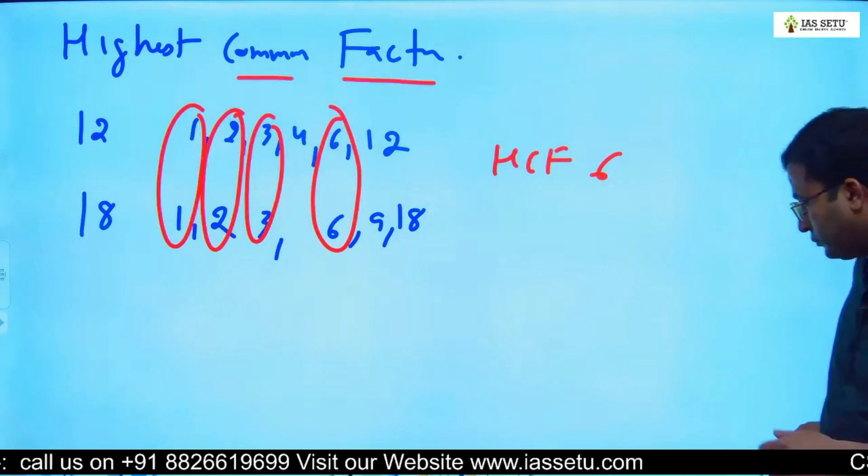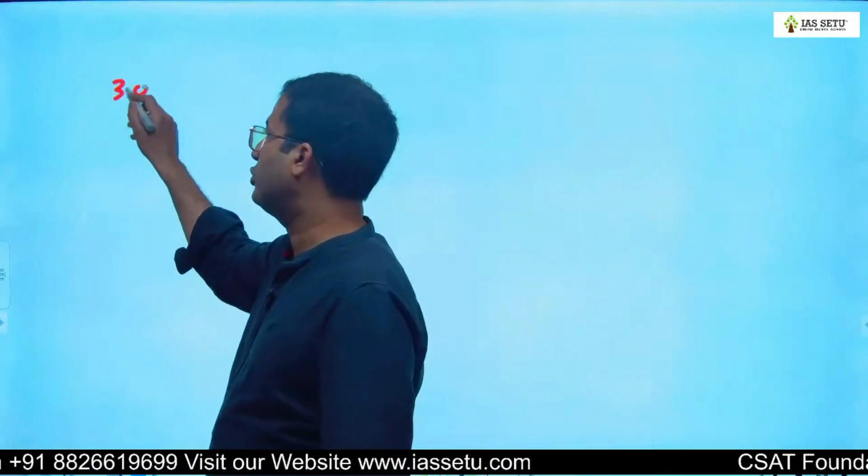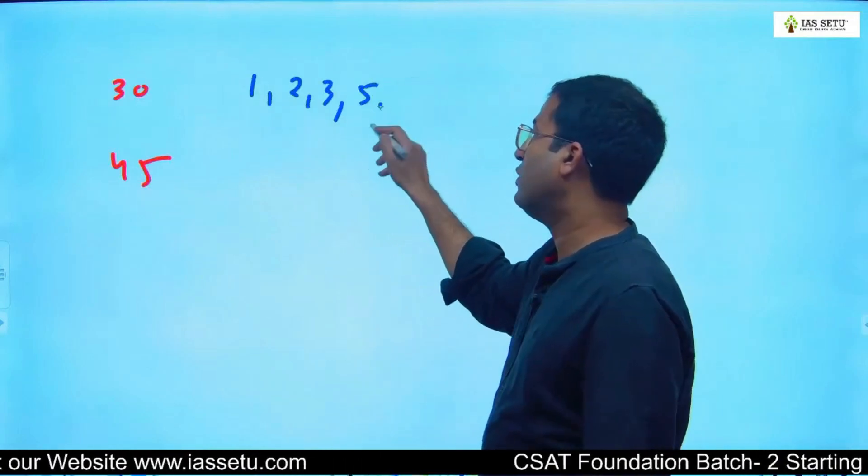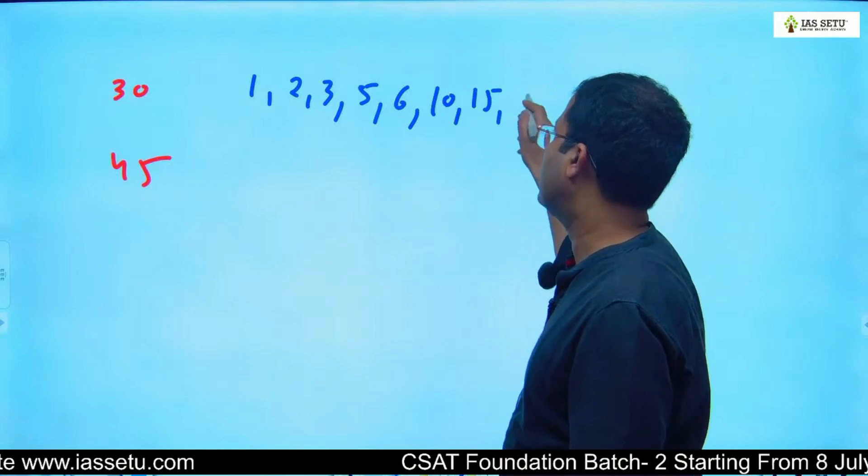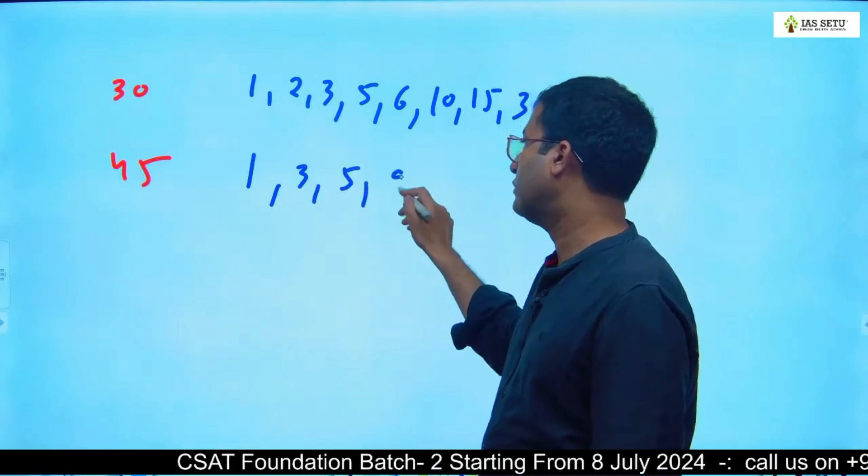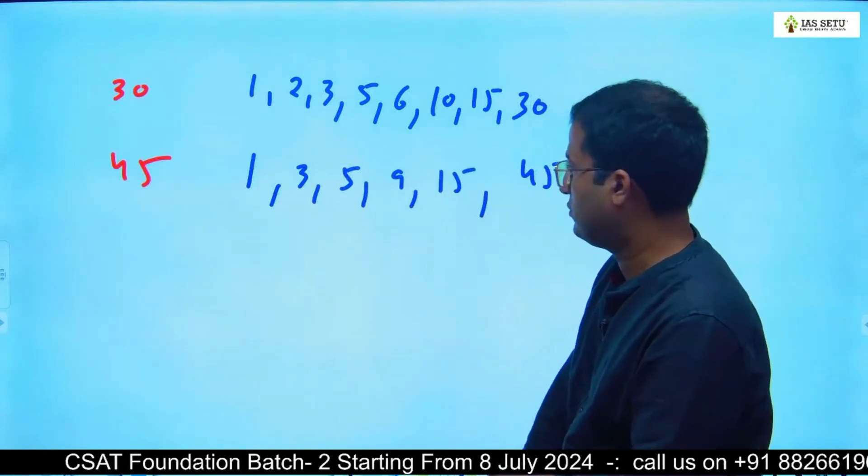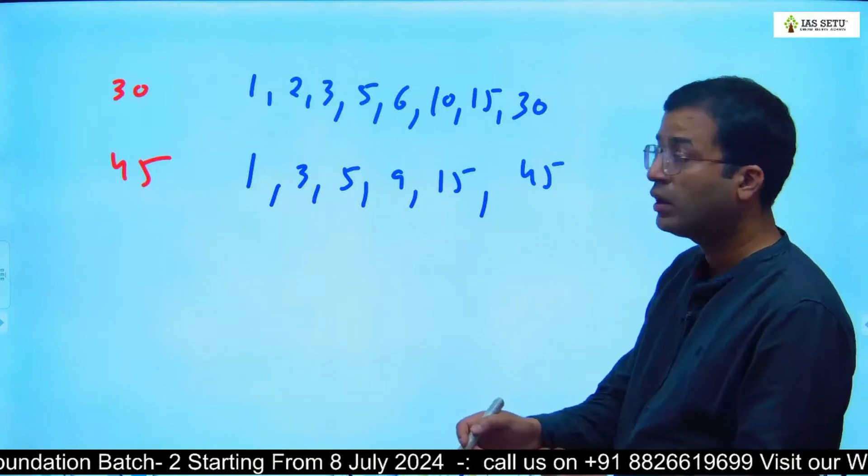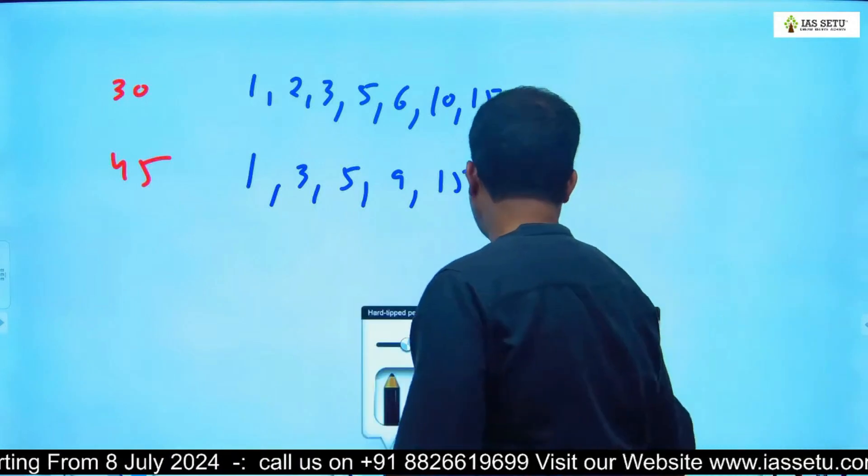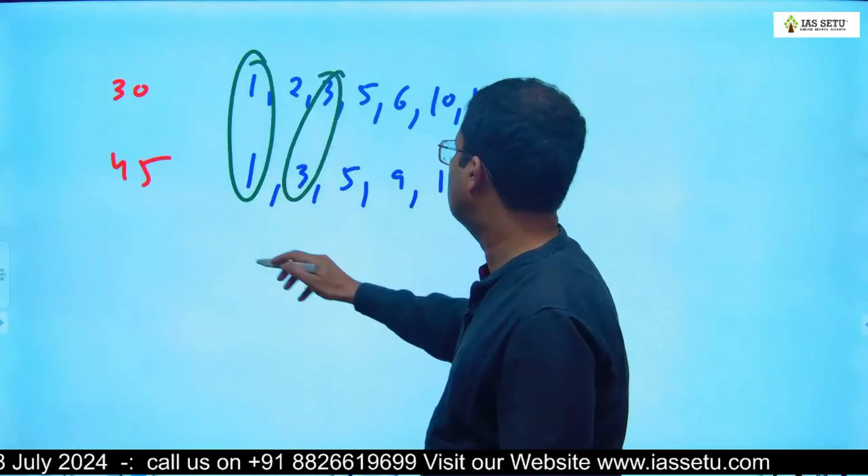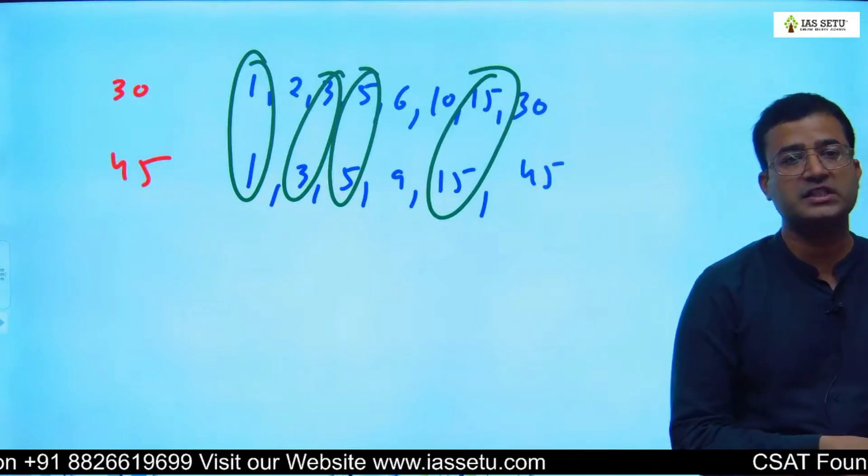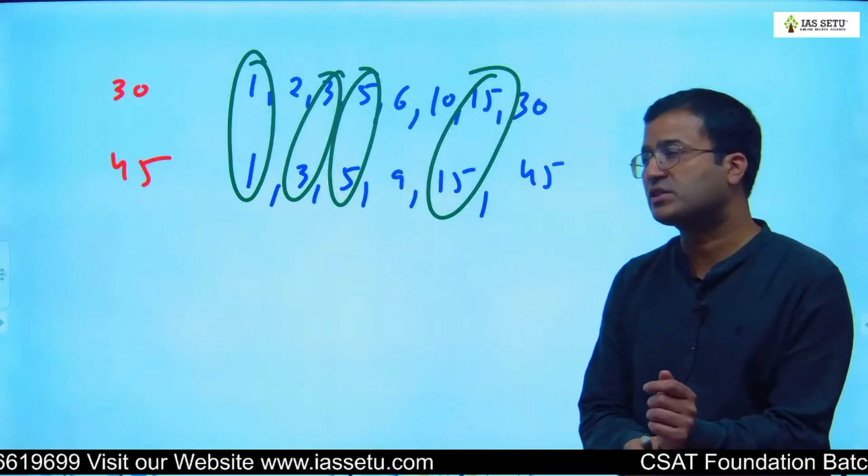One more example, like 30 and 45. What are the factors of 30? 1, 2, 3, 5, 6, 10, 15, 30. Factors of 45: 1, 3, 5, 9, 15, 45. Common factors are 1, 3, 5, 15. Out of these, 5 is highest - wait, 15 is highest. So 15 is HCF of 30 and 45.